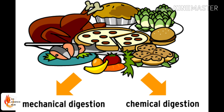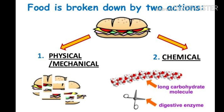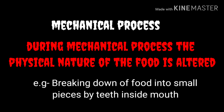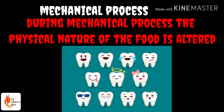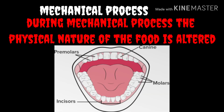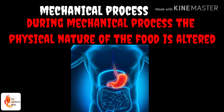Food digestion can take place by two processes: mechanical and chemical. The mechanical process converts the physical nature of the food — for example, when consuming food it is turned into small particles. The food composition does not change; only the size is changed. Think about the buccal cavity — teeth present there help us to cut and grind food into small particles. This is considered mechanical digestion.